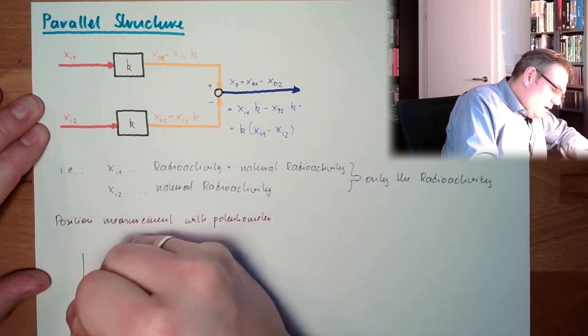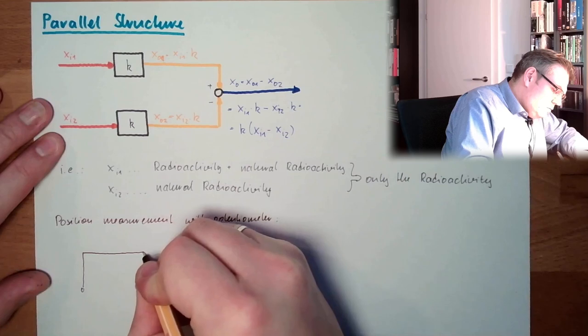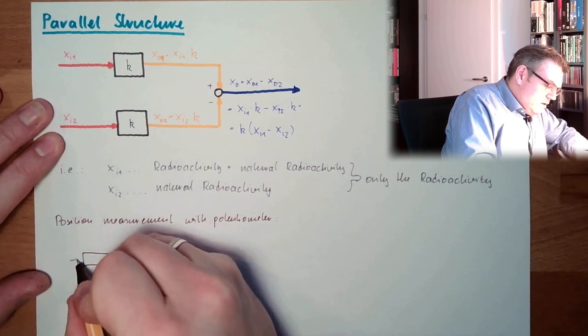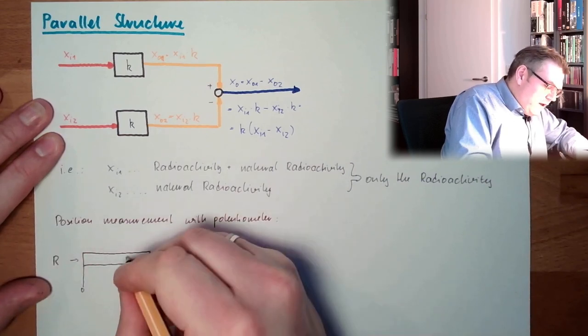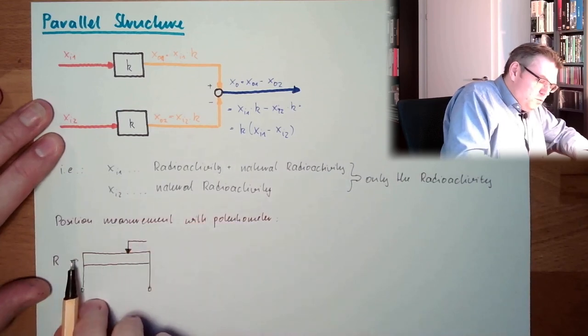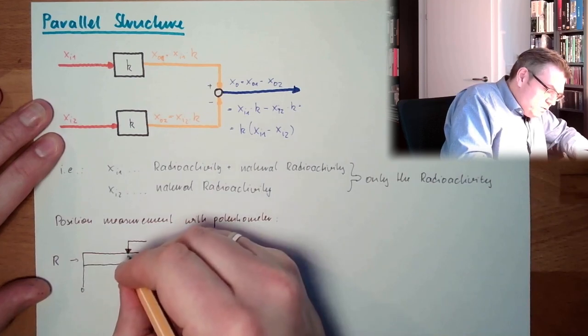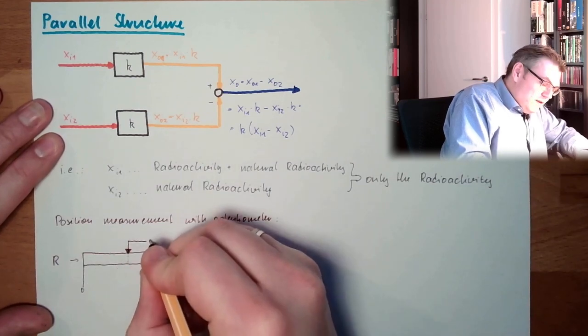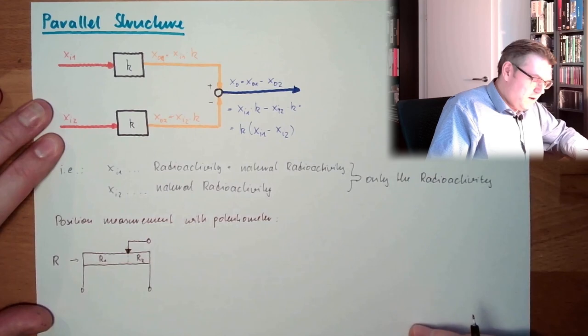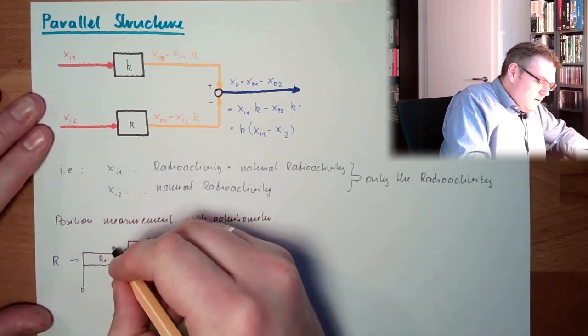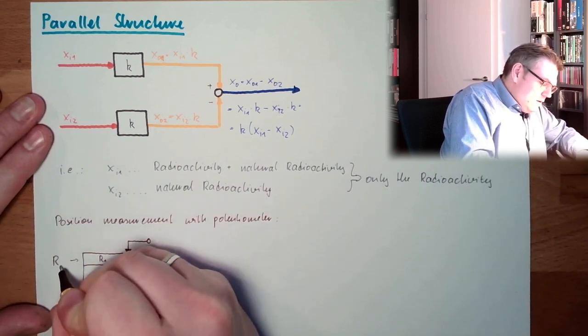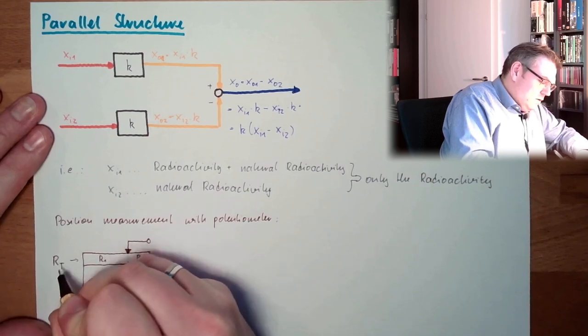I have somewhere a potentiometer. This is R. This has the resistance R. And then there is a position, and I want to know this position because this position is movable. This contact here is dividing this into R1 and then R2. This I will call R total, Rt.